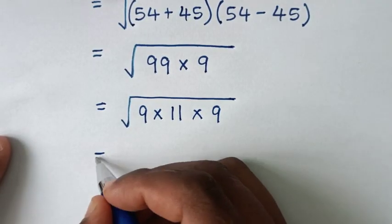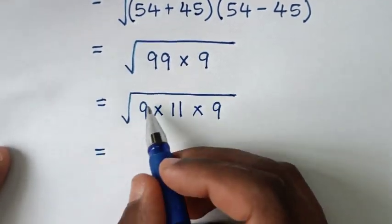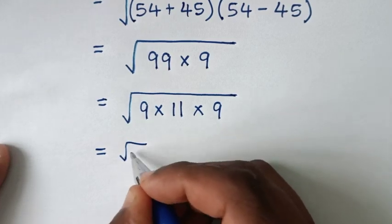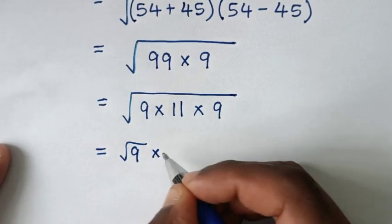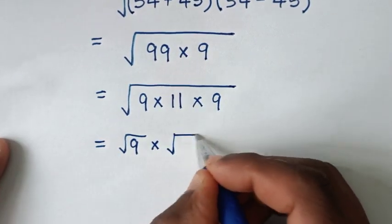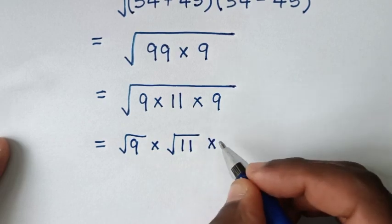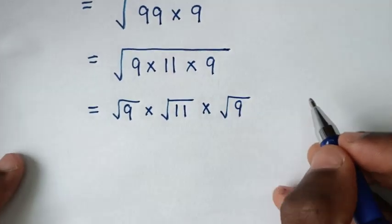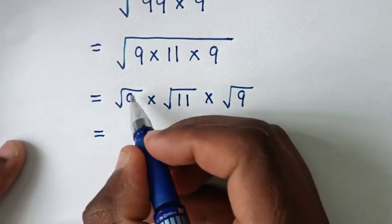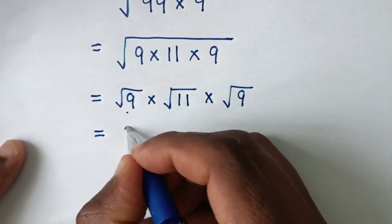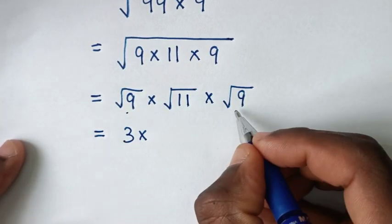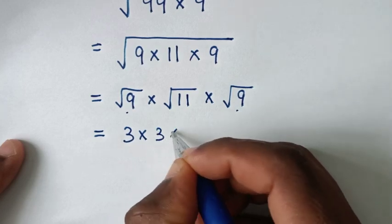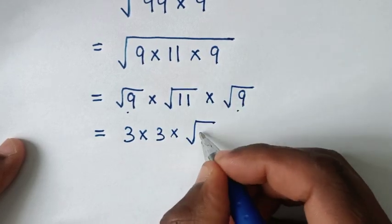Then in the next step it will be equal to, we separate this, so it will be square root of 9, then it will be equal to square root of 9, it is 3, then times square root of this 9, it is 3, then times this square root of 11.